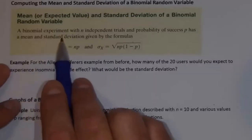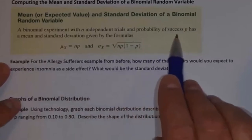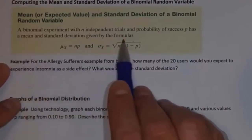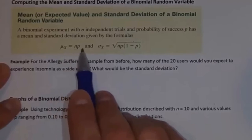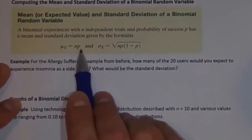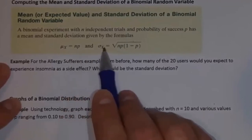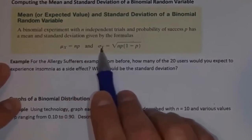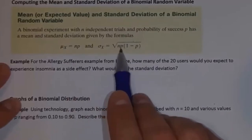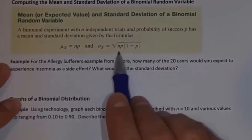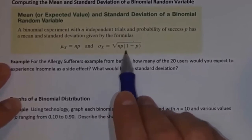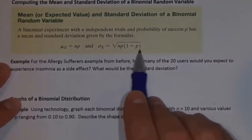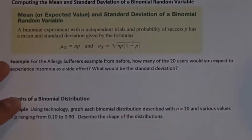For a binomial experiment with N independent trials and probability of success P, the mean equals N times P — the number of trials times the probability of success. The standard deviation equals the square root of N times P times 1 minus P, where 1 minus P is the probability of failure.